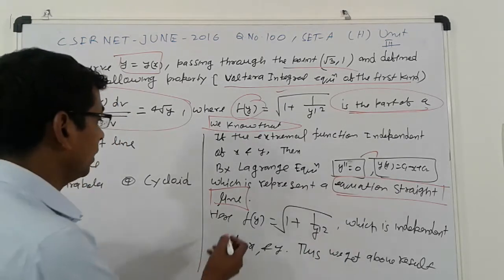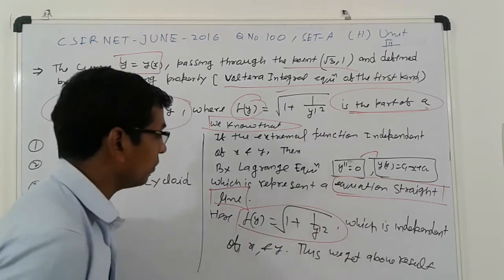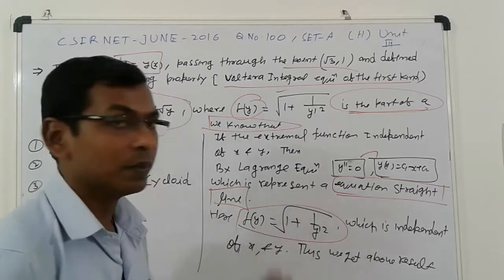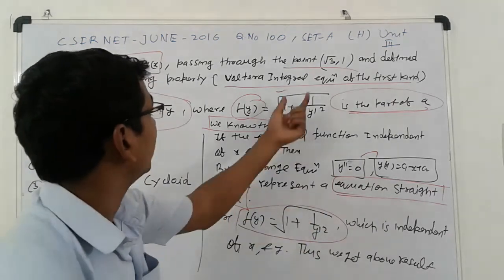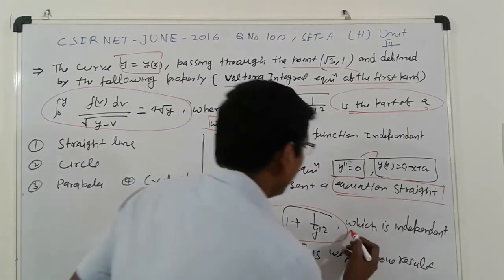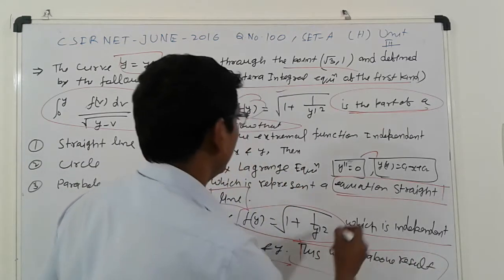So now here, f of y is given. And here not present x and y. Simply directly here, x and y not present here. So that case which is independent of x and y. So thus we get the result.